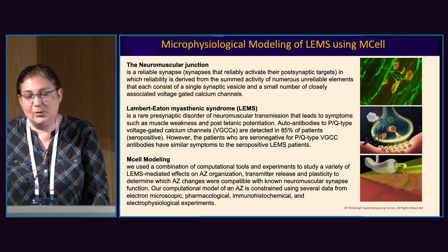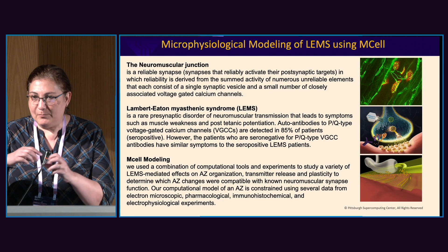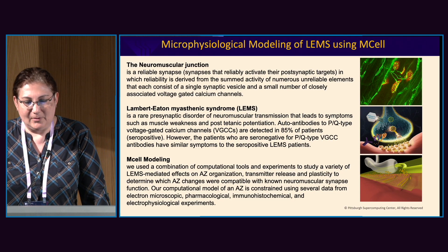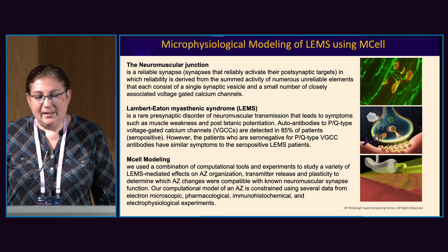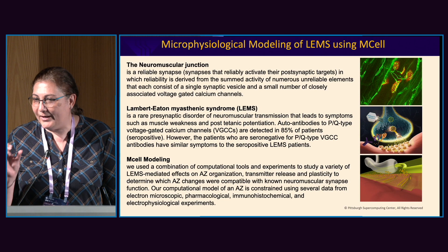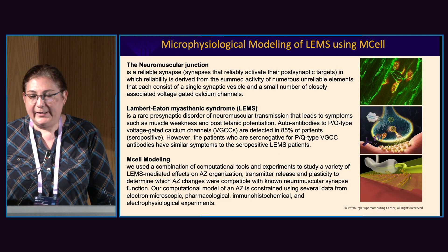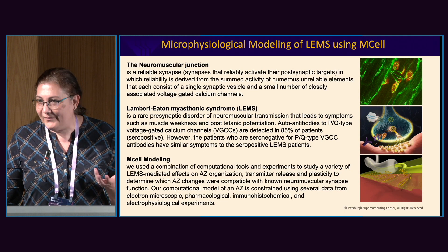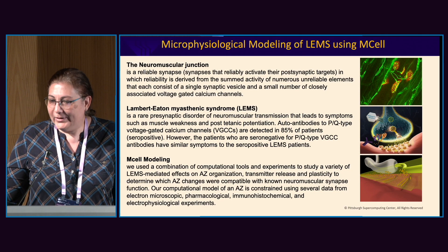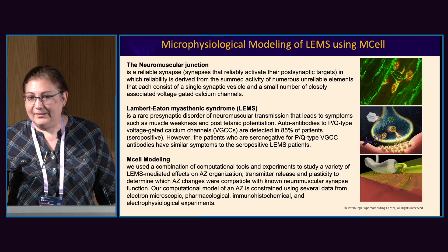I'm going to talk about three different things. One is the neuromuscular junction — it is a junction between the nerve and the muscle, and we are interested in the presynaptic side. It is a reliable transmitter release machinery made from smaller, unreliable units. Each of these units is composed of one vesicle and just a few voltage-gated calcium channels associated with that vesicle.